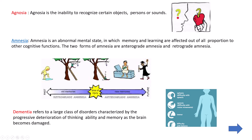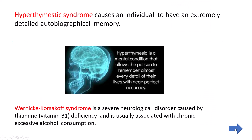Dementia is a condition characterized by progressive deterioration of thinking ability and memory as the brain becomes damaged. Dementia patients have difficulty with speech, motor movements, and tremors. Next we can see hyperthymesia syndrome and Wernicke-Korsakoff syndrome — both are also memory-related conditions.